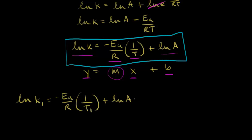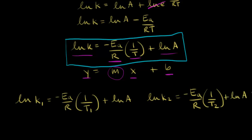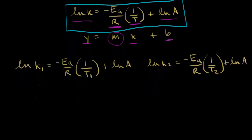Now let's use a different temperature, T2. At a different temperature we have a different rate constant, k2. So the natural log of k2 is equal to negative Ea over R times one over T2, plus the natural log of A. Now we have two different equations for two different temperatures with two different rate constants.